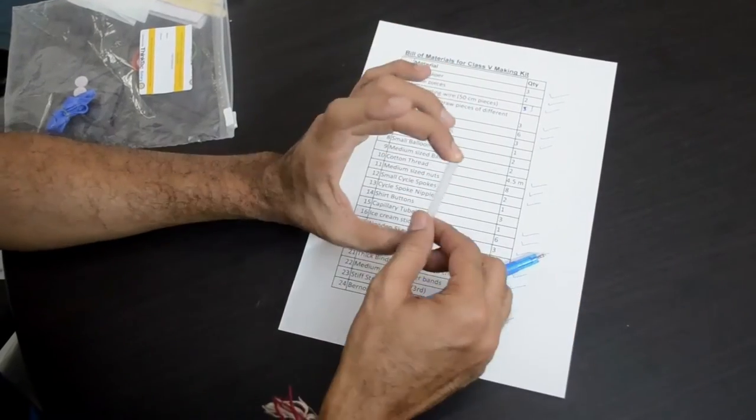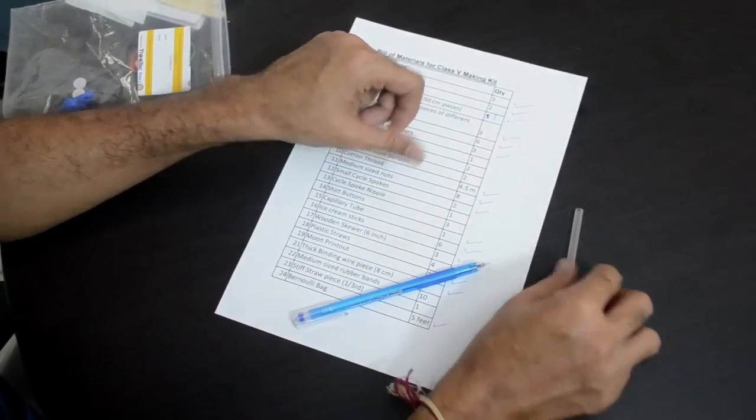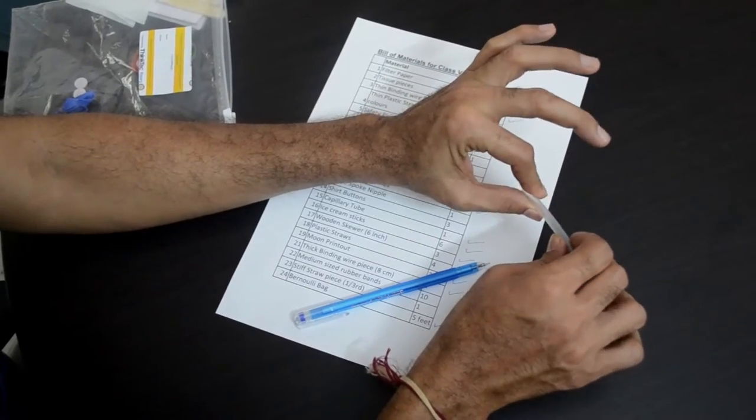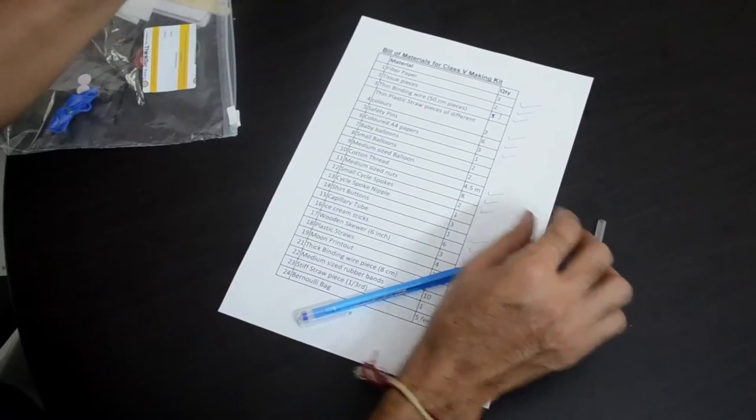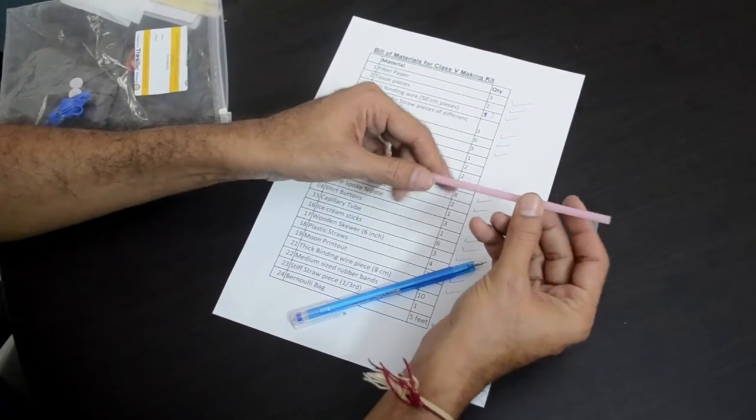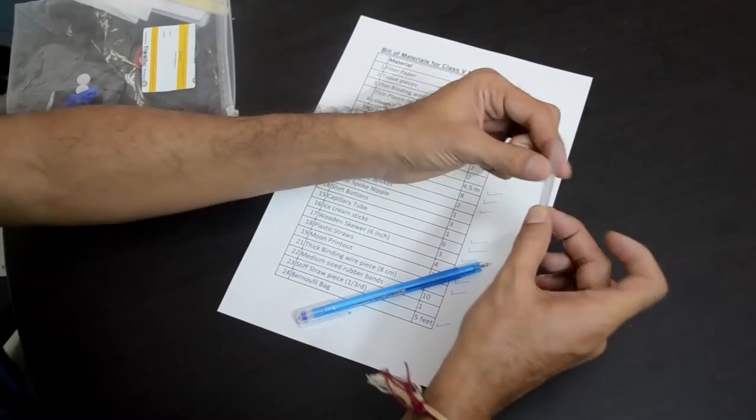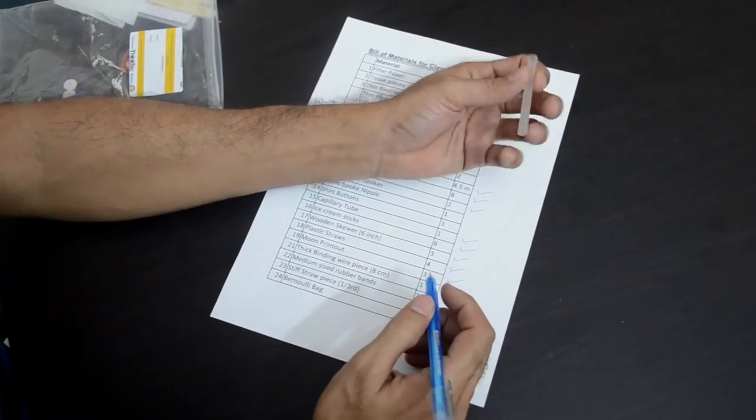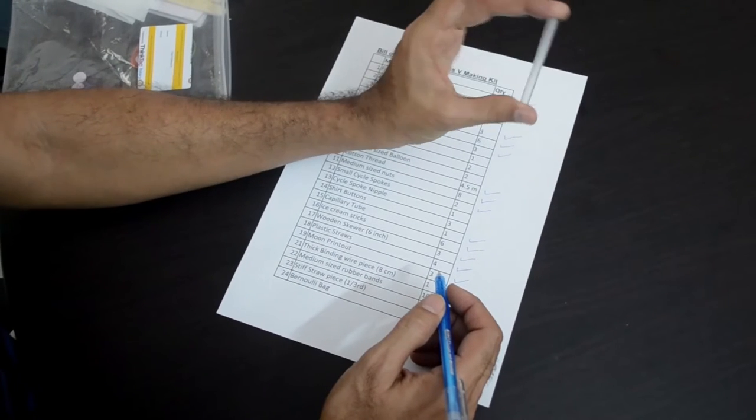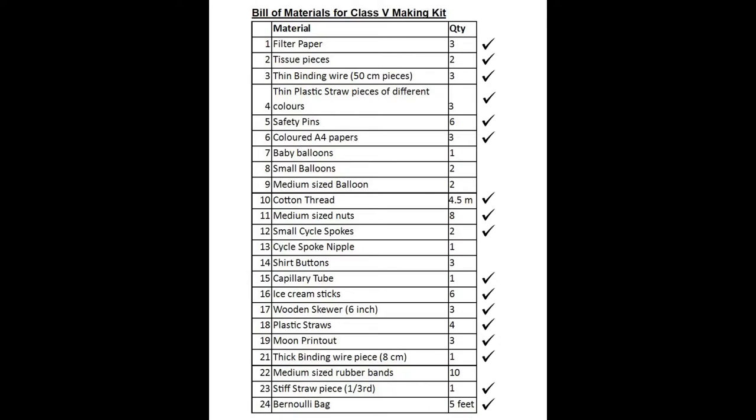A straw piece. This is a different kind of straw, it is much stiffer and thicker. It is not easy to bend this, whereas these straws are easier to bend, thinner plastic. A thick plastic straw. You will need these for the balloon bugle activity. One piece which is like a third of a full straw, item number 23 in our bill of materials.